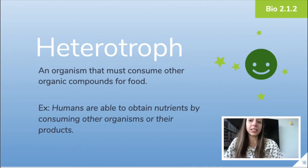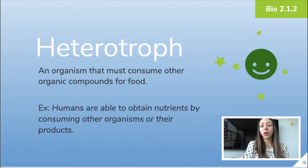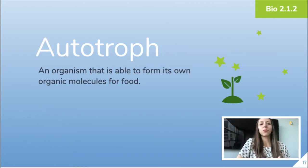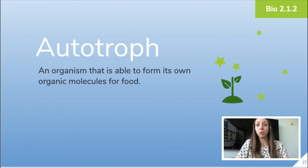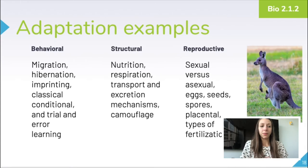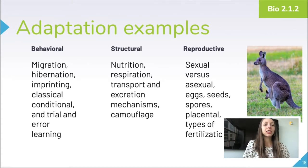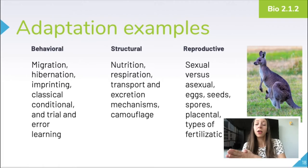Let's talk about different strategies and adaptations organisms have to survive. A heterotrophic organism must consume other organic compounds for food — for example, we are heterotrophs that obtain nutrients by consuming other organisms or their products. Autotrophs are organisms that form their own organic molecules through processes like photosynthesis, where plants produce glucose from gases. One of our goals in biology is to analyze the survival and reproductive success of organisms in terms of behavioral, structural, and reproductive adaptations, which aid in survival and most likely resulted from responses to environmental factors or changes.